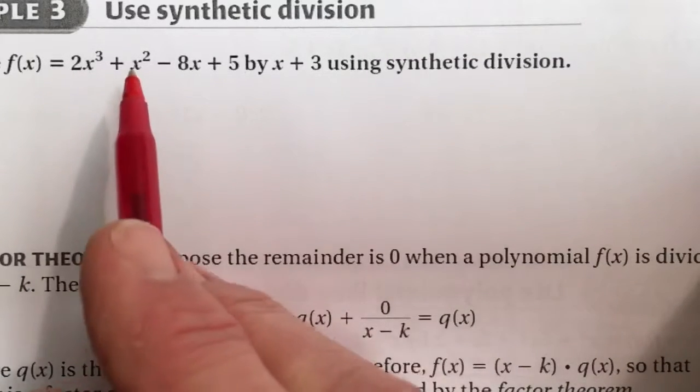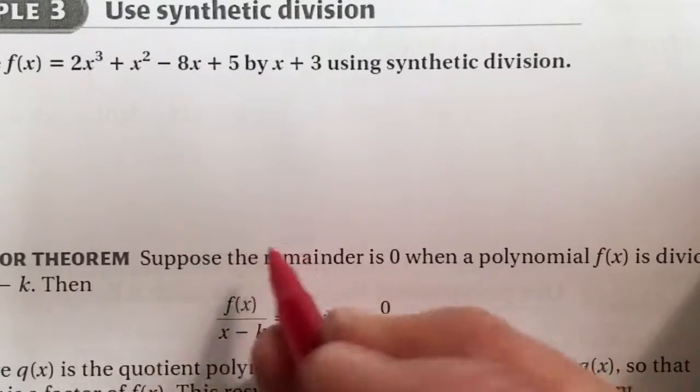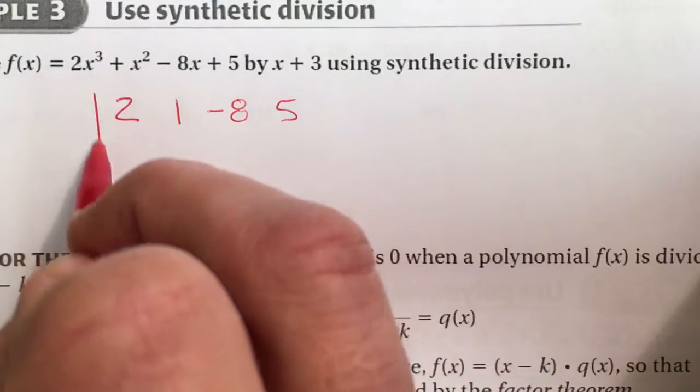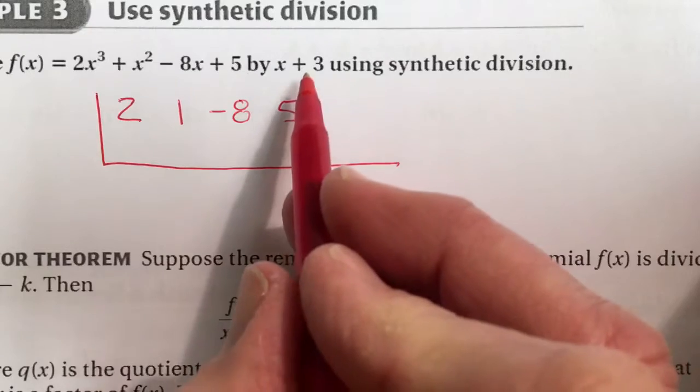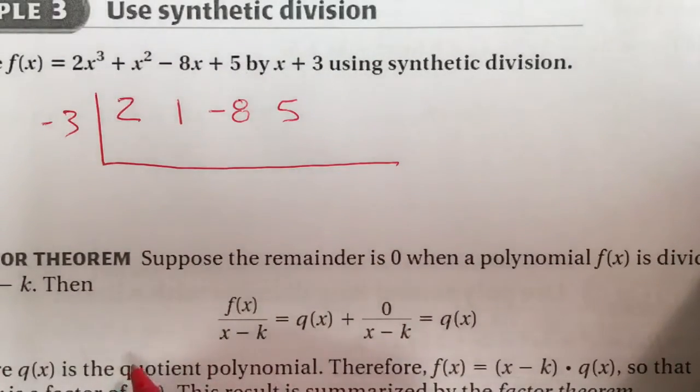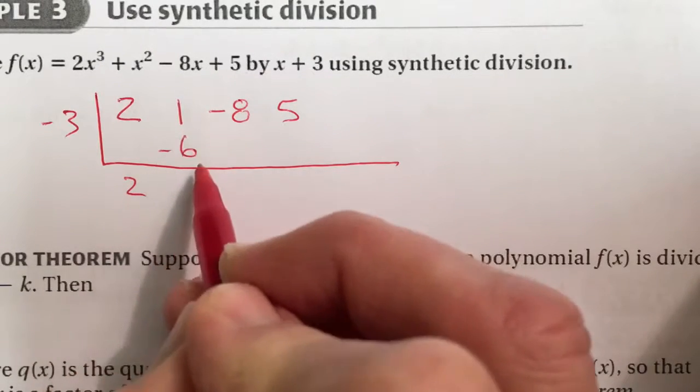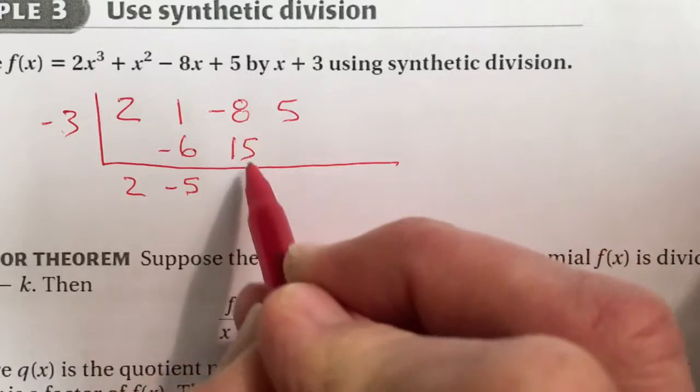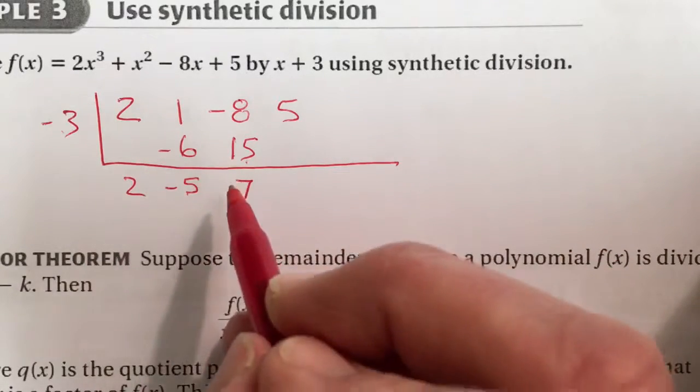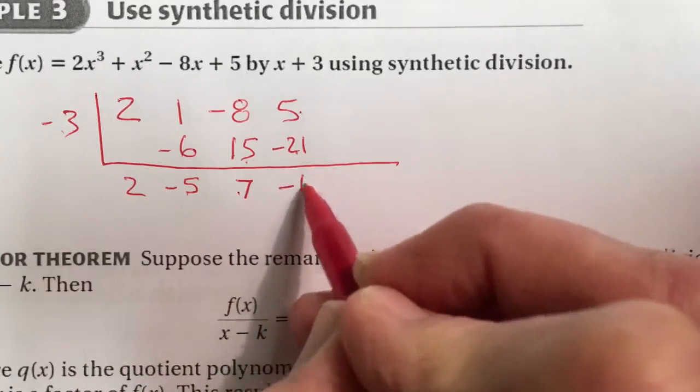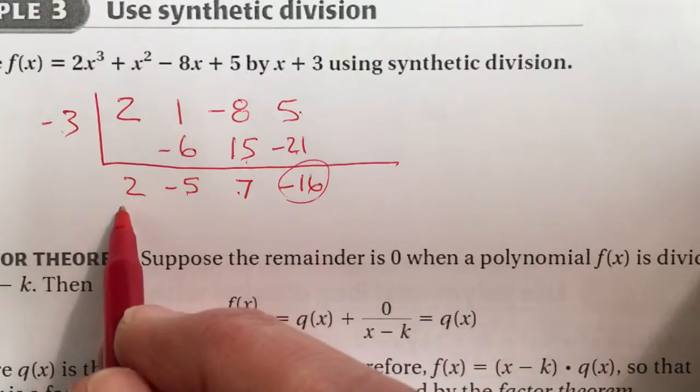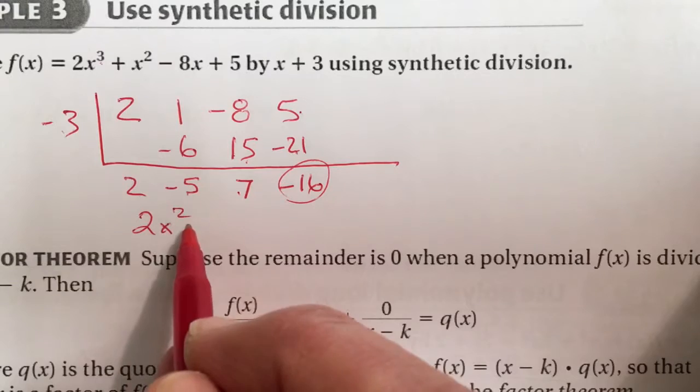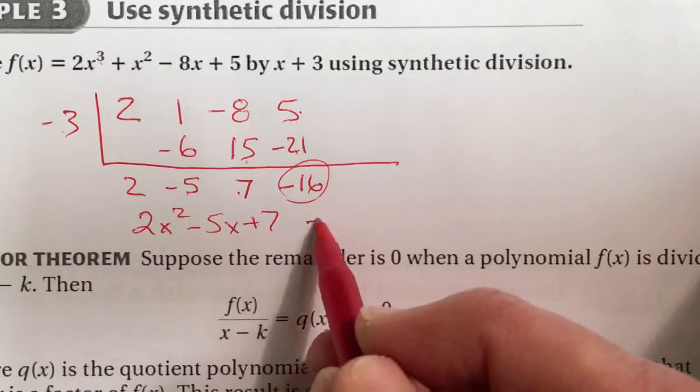One more synthetic division. Here's our dividend and our divisor. Setting it up with synthetic, we have 2, 1, negative 8, and 5. Those are the coefficients and the constant. Our divisor is plus 3, so we're going to change it to negative 3. Now let's go through the process. Drop the 2 down. Multiply, get negative 6. Add these up, get negative 5. Negative 3 times negative 5 is positive 15. Positive 15 and negative 8 is positive 7. Negative 3 times 7 is negative 21. Negative 21 and 5 is negative 16. So our answer would then be 2, and when you write your answer, you drop the degree from 1. So this becomes a squared. So it's 2x^2 minus 5x plus 7, remainder of negative 16.